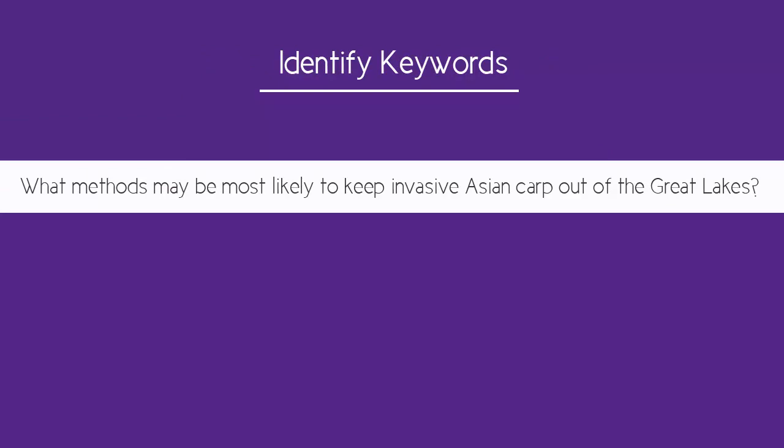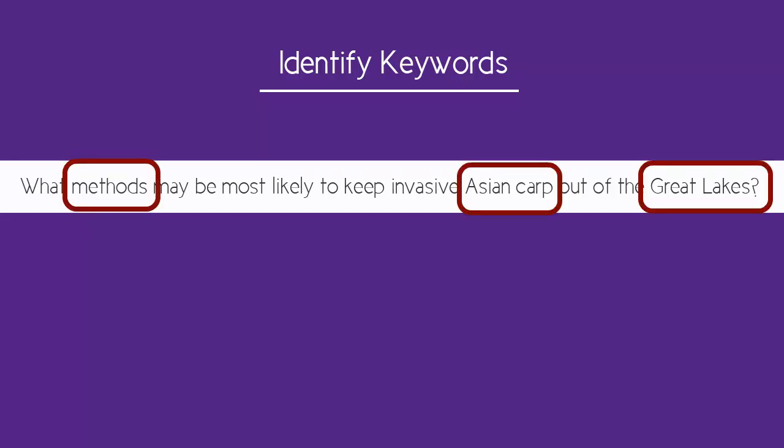The next step is to identify the main concepts or ideas in your question or sentence. My main concepts are methods, Asian carp, and Great Lakes. You need at least two key concepts, maybe more, to present a good argument in science research. Otherwise, your searches may result in too many irrelevant resources.